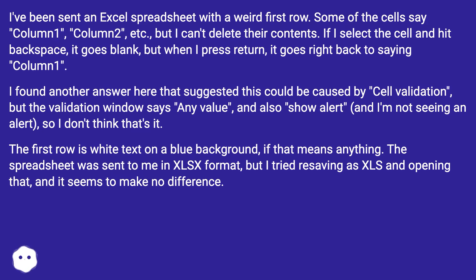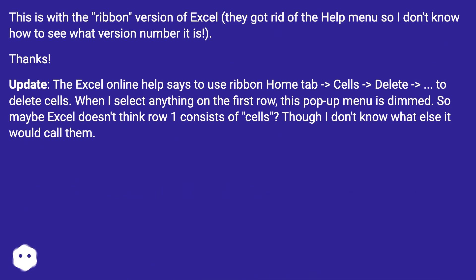The first row is white text on a blue background, if that means anything. The spreadsheet was sent to me in XLSX format, but I tried resaving as XLS and opening that, and it seems to make no difference. This is with the ribbon version of Excel; they got rid of the help menu so I don't know how to see what version number it is.